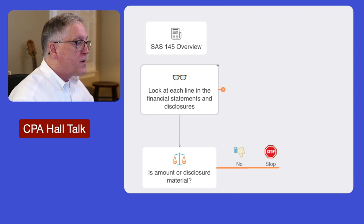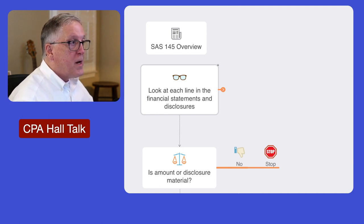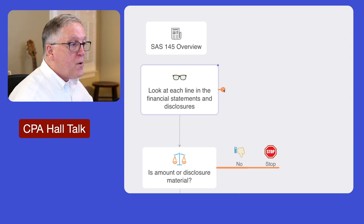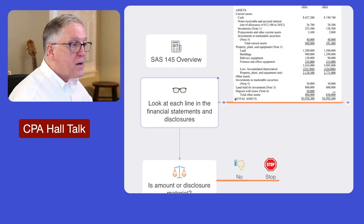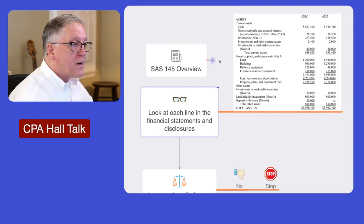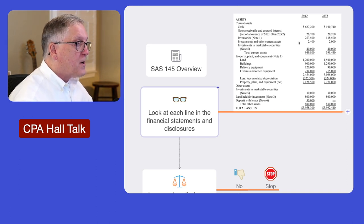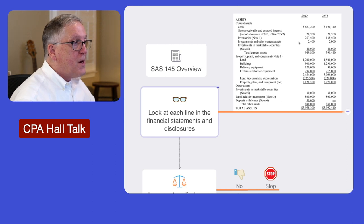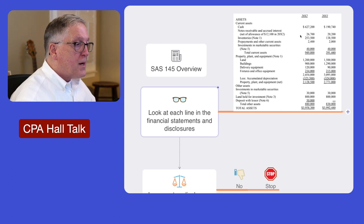As we begin, think about the financial statements you're going to audit — specifically the balance sheet, the income statement, and the notes to the financials. As you begin the risk assessment process, you may want to reach for the prior year financial statements and get those fresh in your mind. Think about what are the material areas on the balance sheet, the income statement, and in the notes. Grab your prior year financial statements and take a look. If you have the current year financials, take a look at those as well.